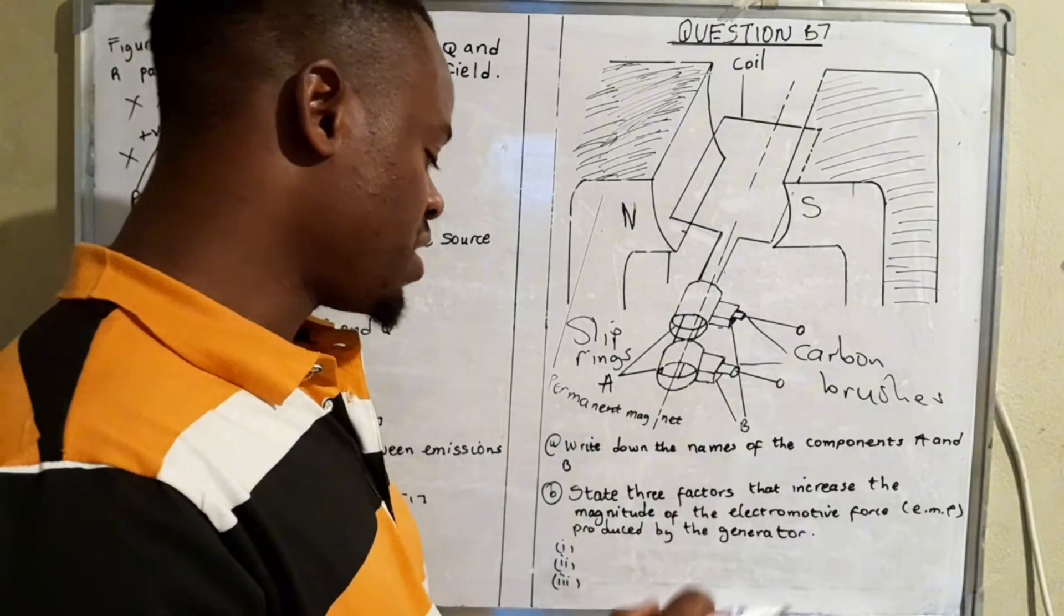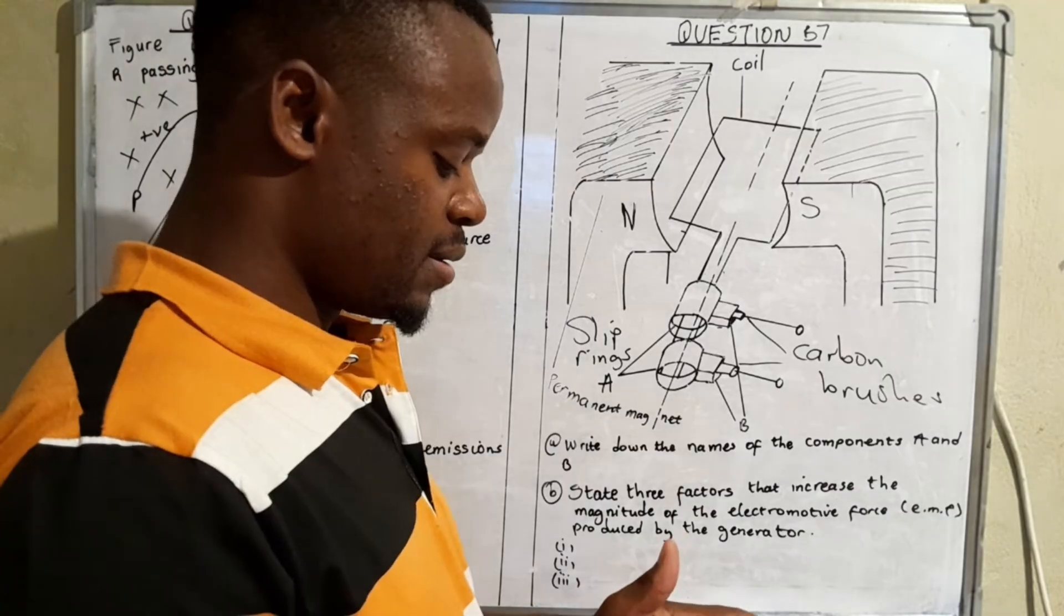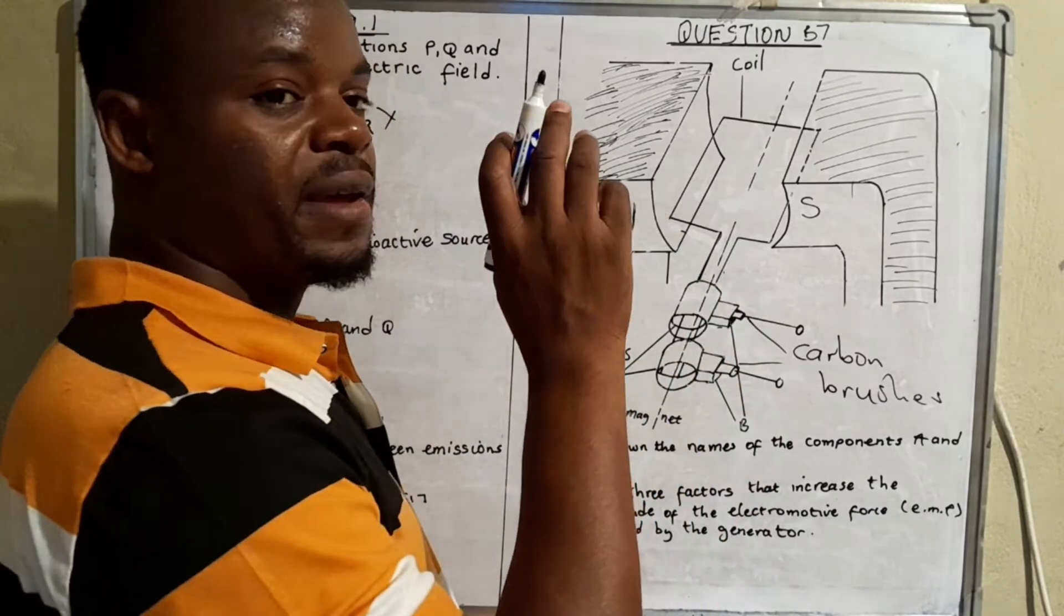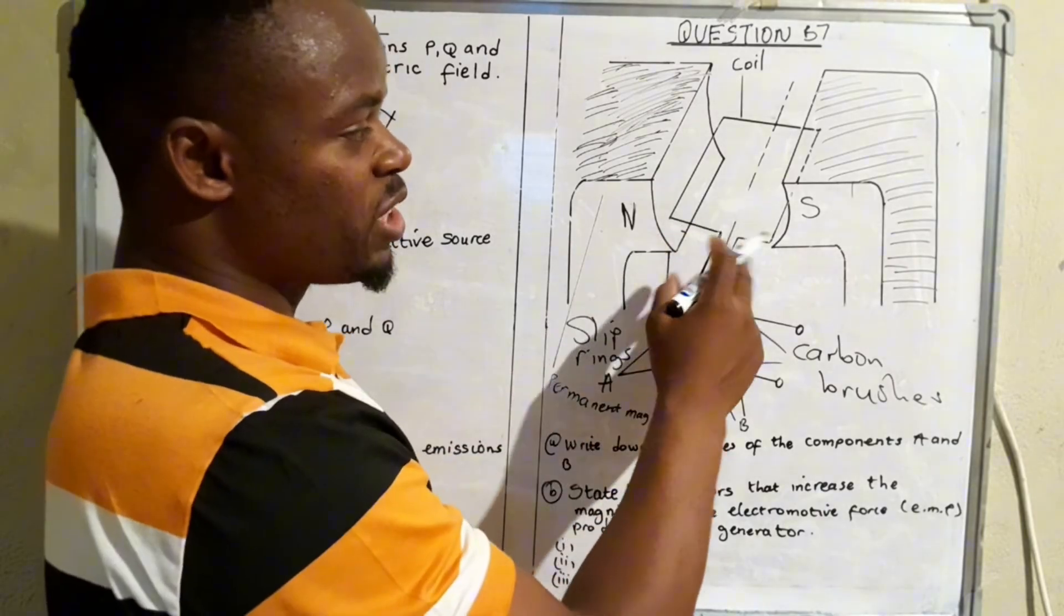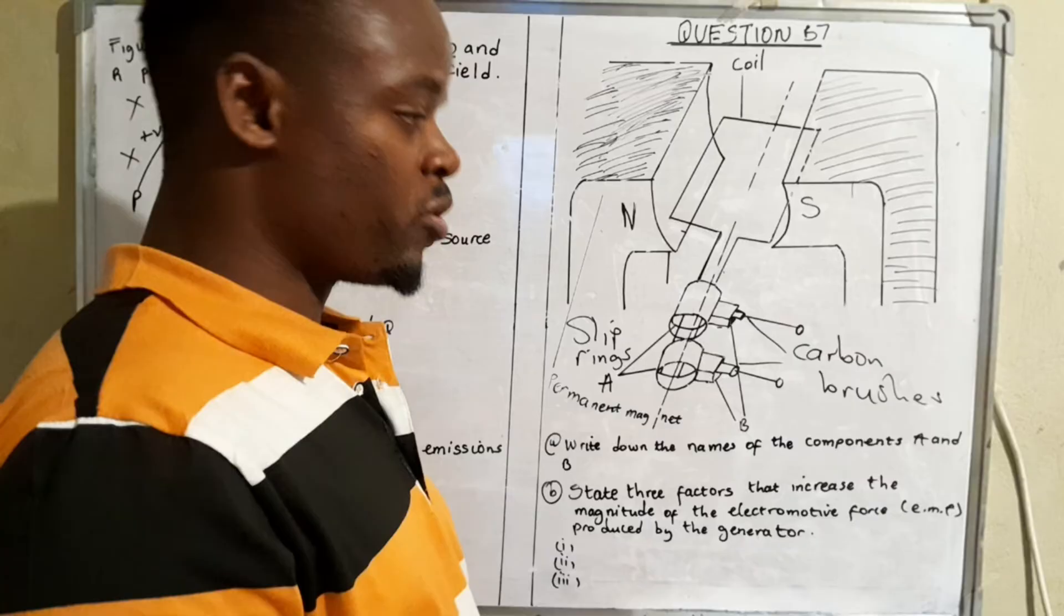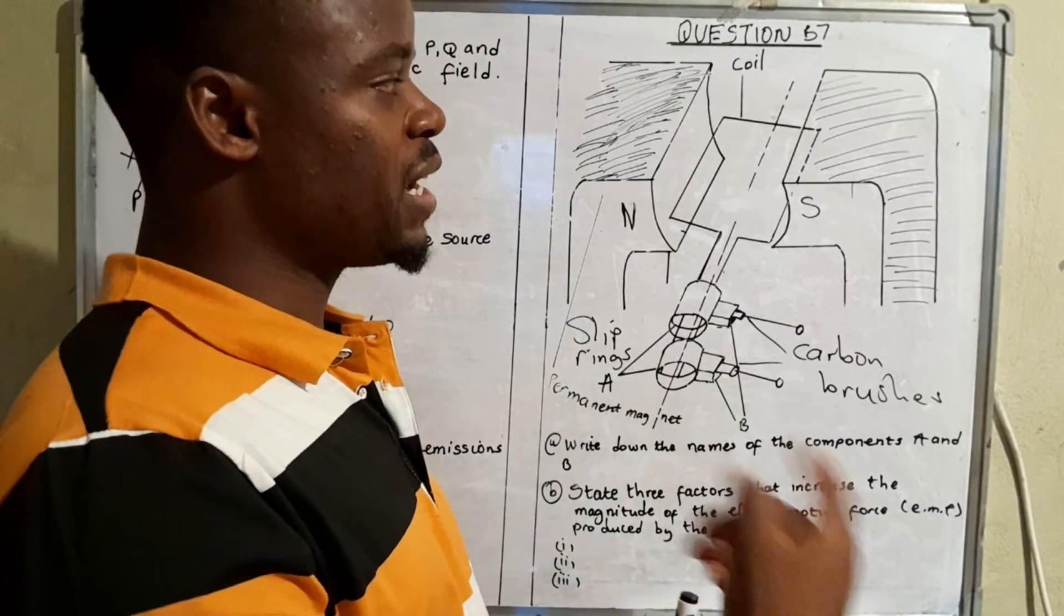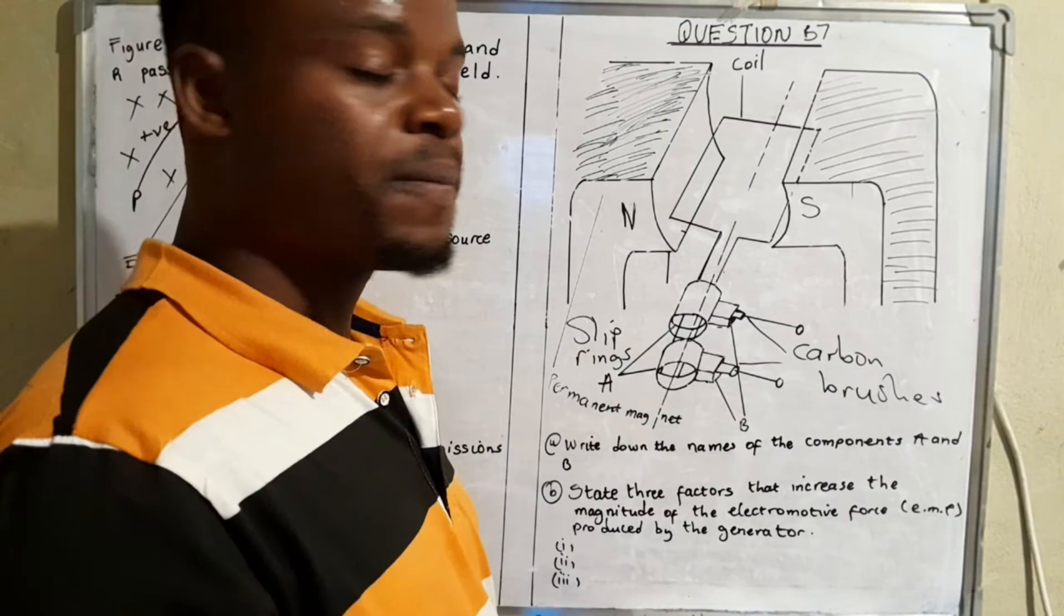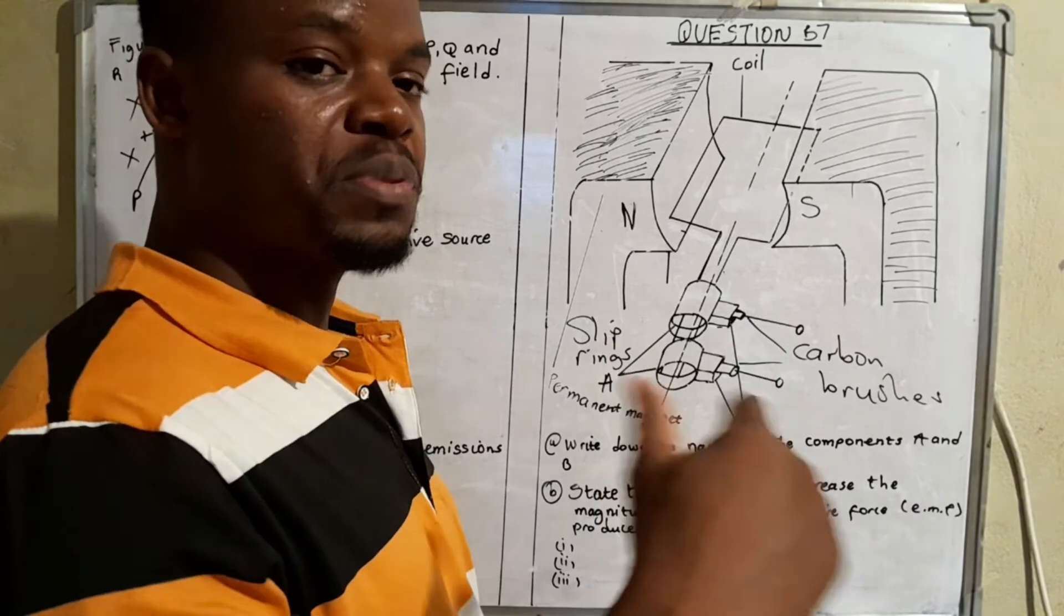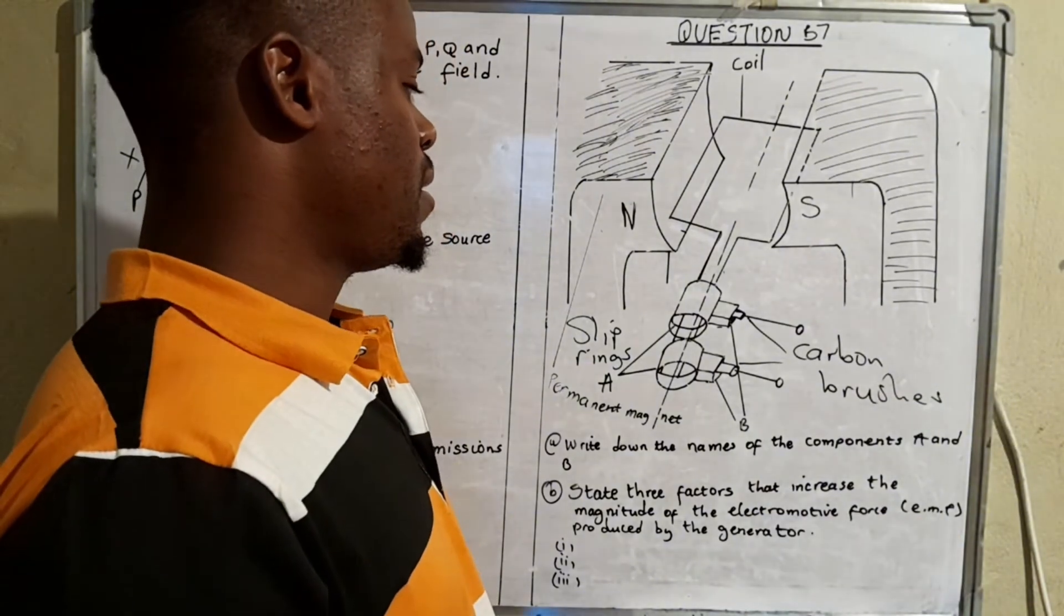State three factors that increase magnitude of the electromotive force produced by the generator. The factors include the following: first is the speed of rotation. If it's spinning at a pretty fast rate then there's more electromagnetic force that is generated.